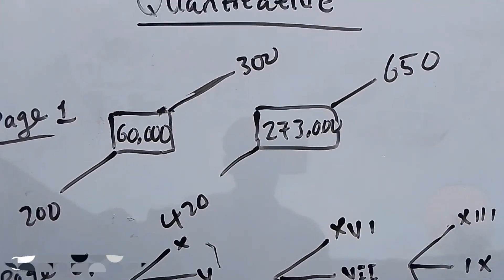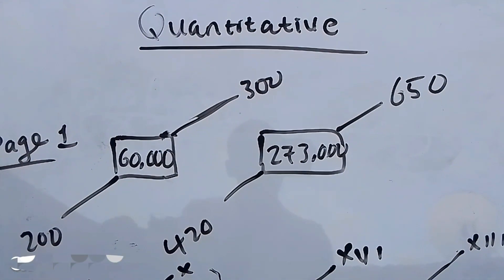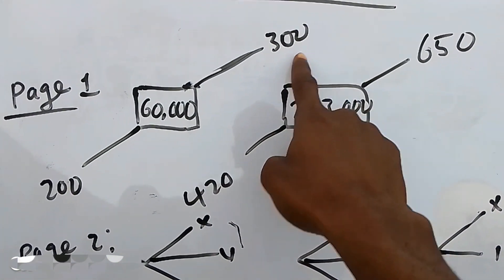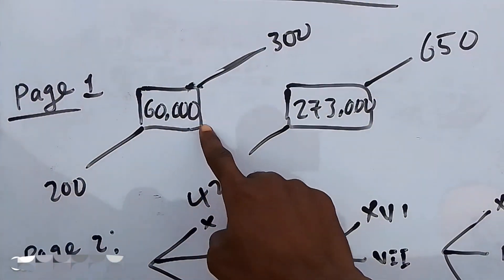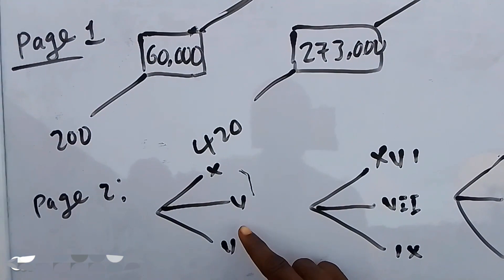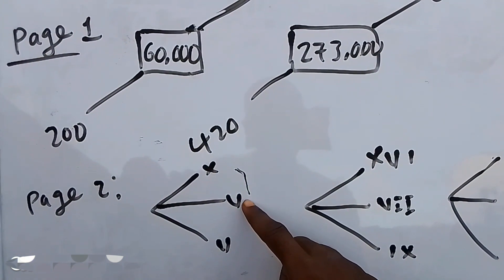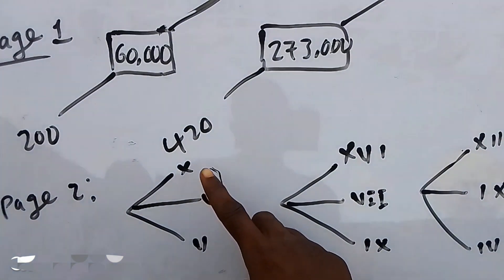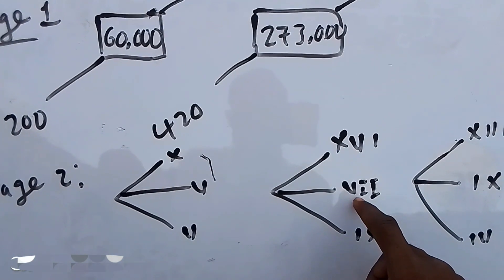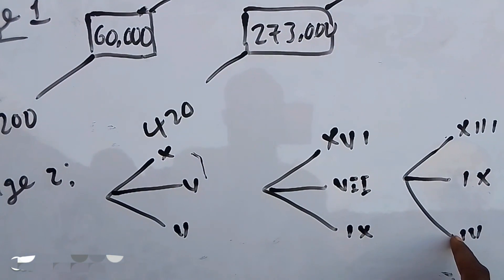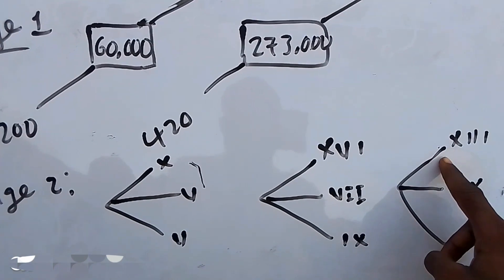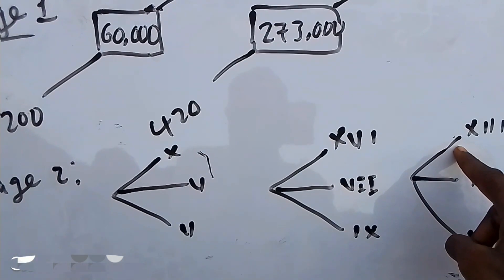We are going to be using very quick methods to solve quantitative reasoning. On page one, this times this gives you this, this times this gives you this — it doesn't break your sweat. Then this plus this gives you this. 5 plus 5 gives you 10 in Roman figures, then 9 plus 7 gives you 16, then 4 plus 9 gives you 13.